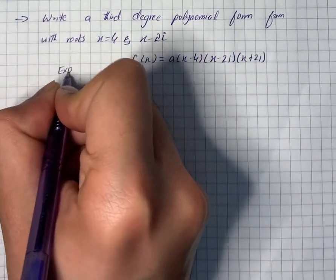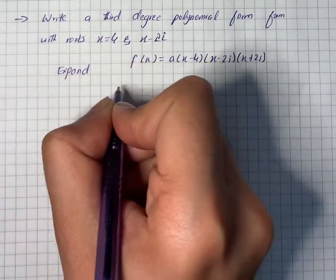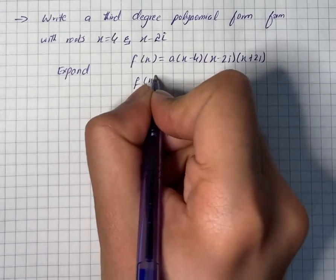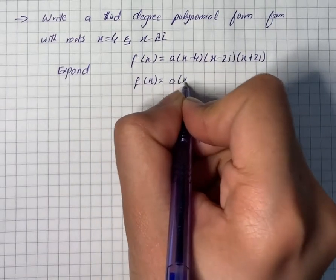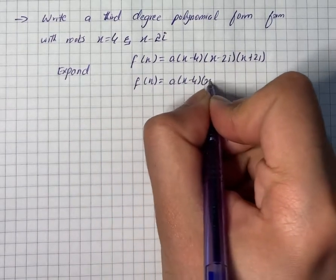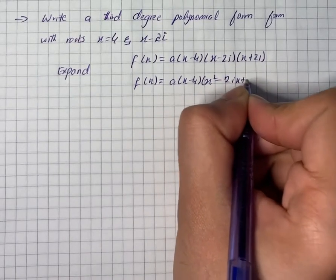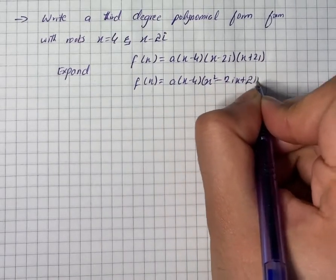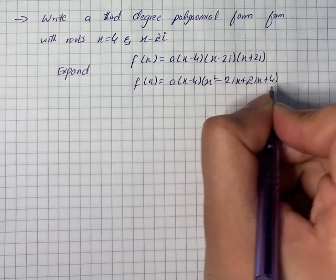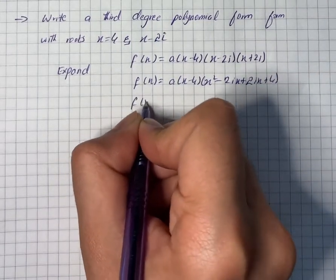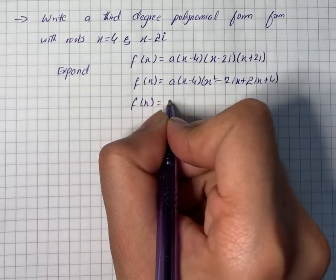The expansion gives us f(x) = a(x - 4)(x² - 2ix + 2ix + 4). Simplifying, this gives us f(x) = a(x - 4)(x² + 4).